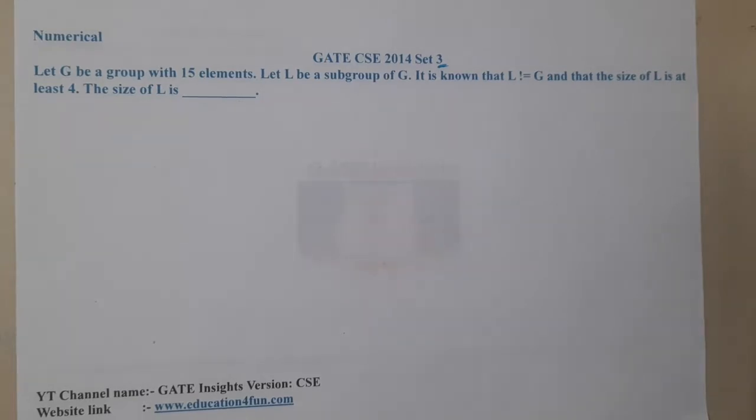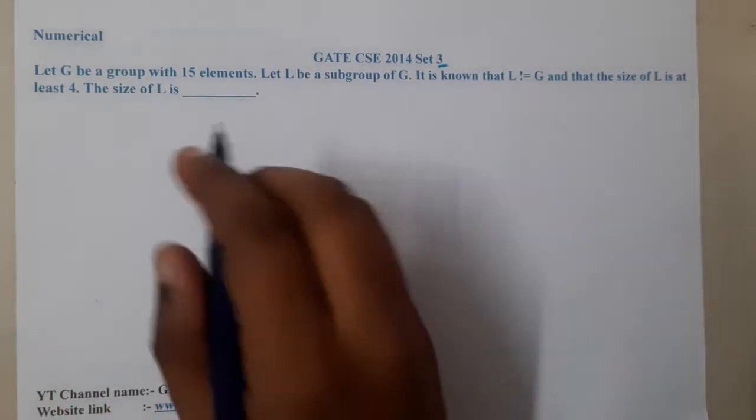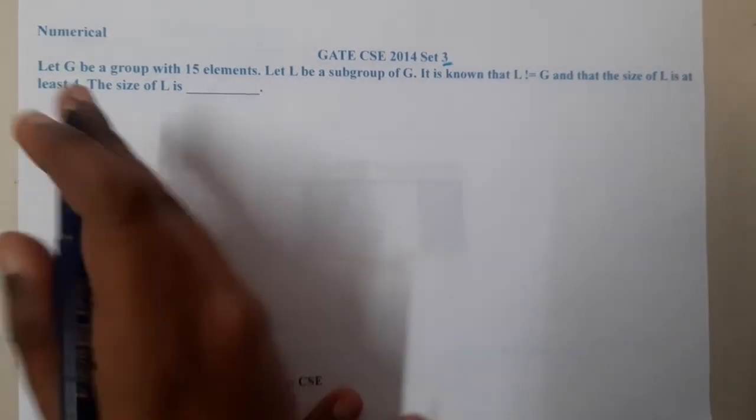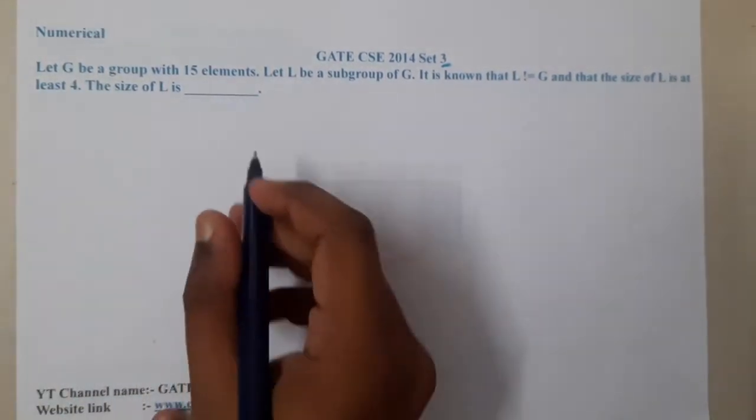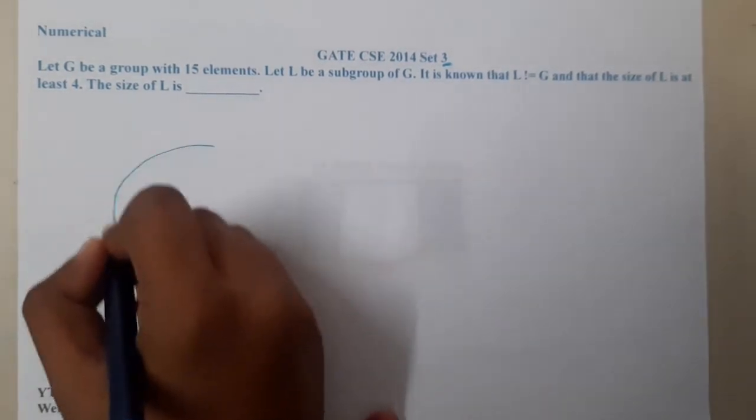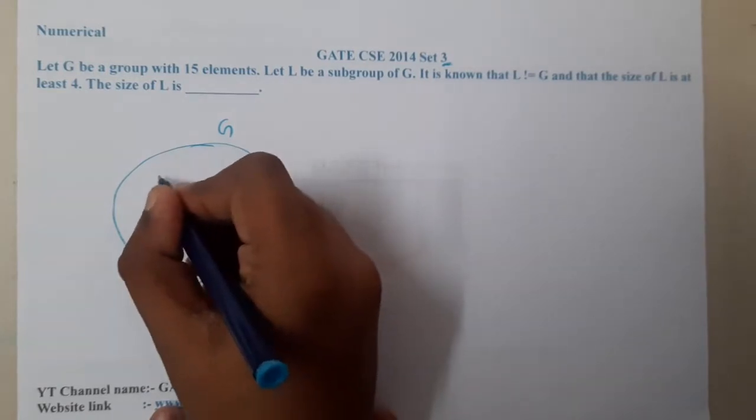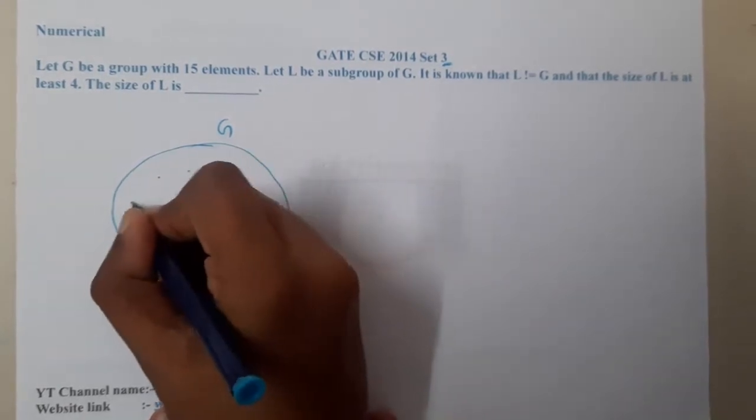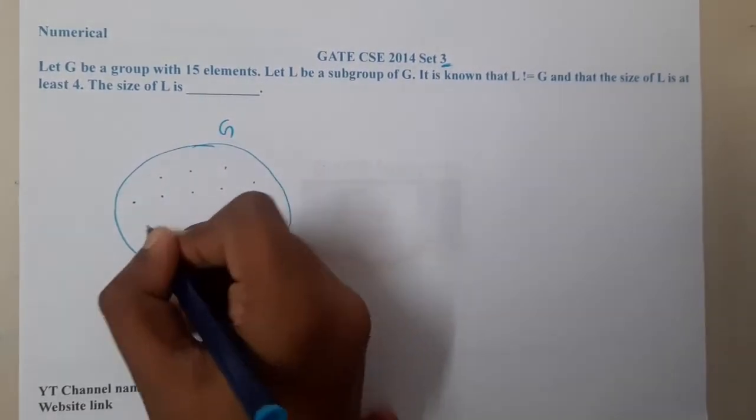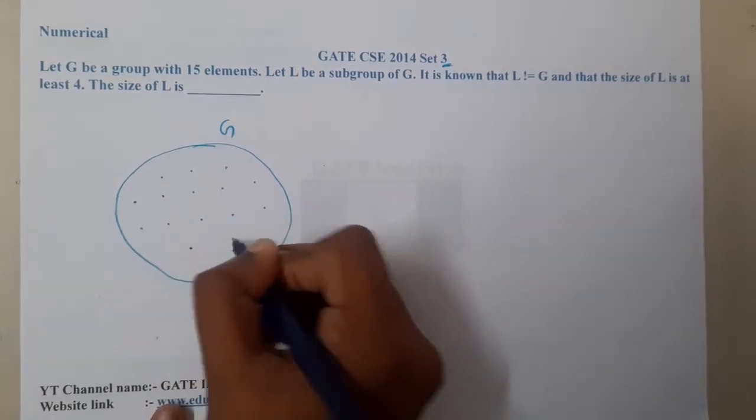Let us try to analyze it. This is a tricky question because each and every statement gives some information. They are saying there is a group G, and there are a total of 15 elements: 1, 2, 3, 4, 5, 6, 7, 8, 9, 10, 11, 12, 13, 14, and